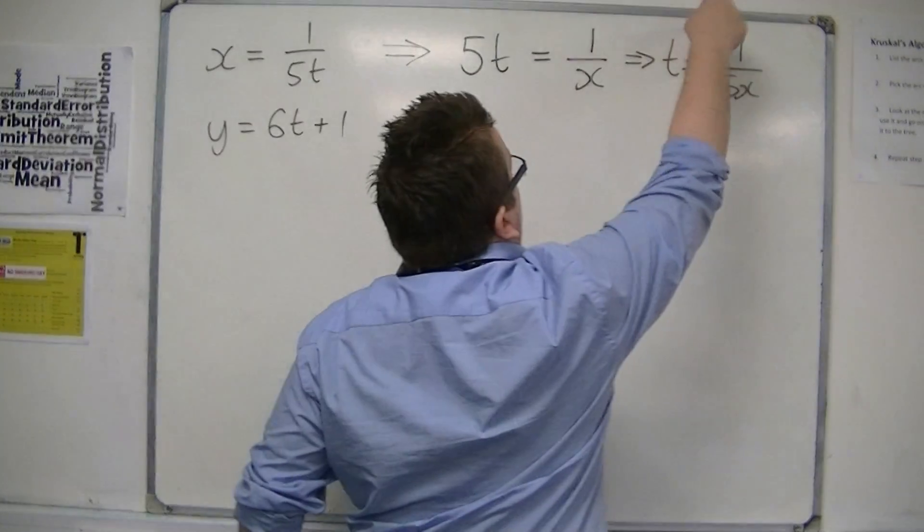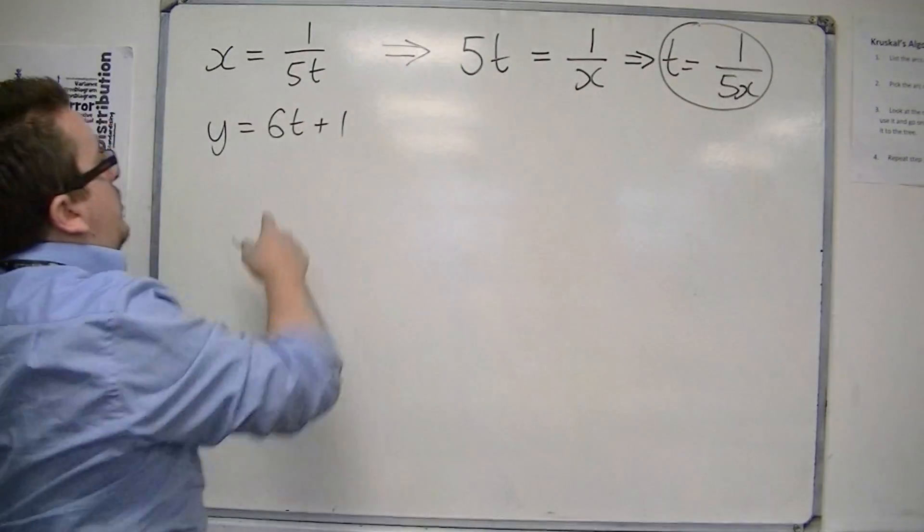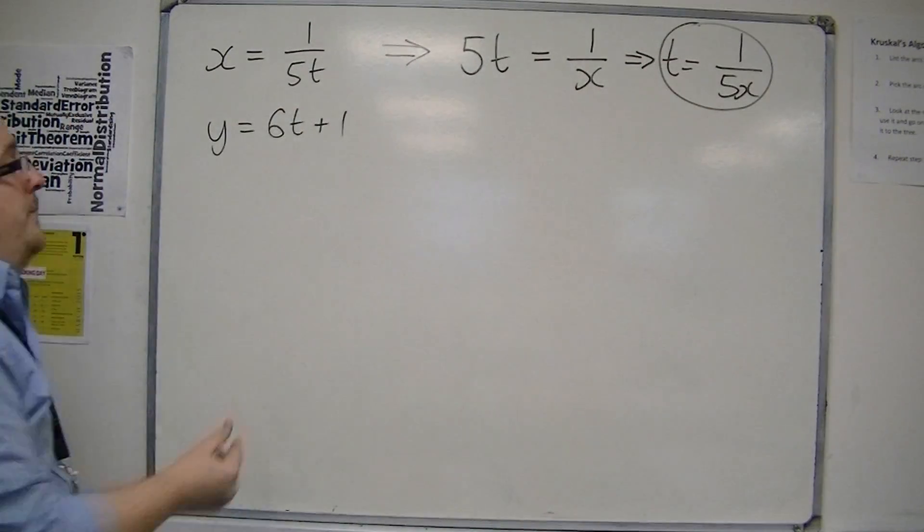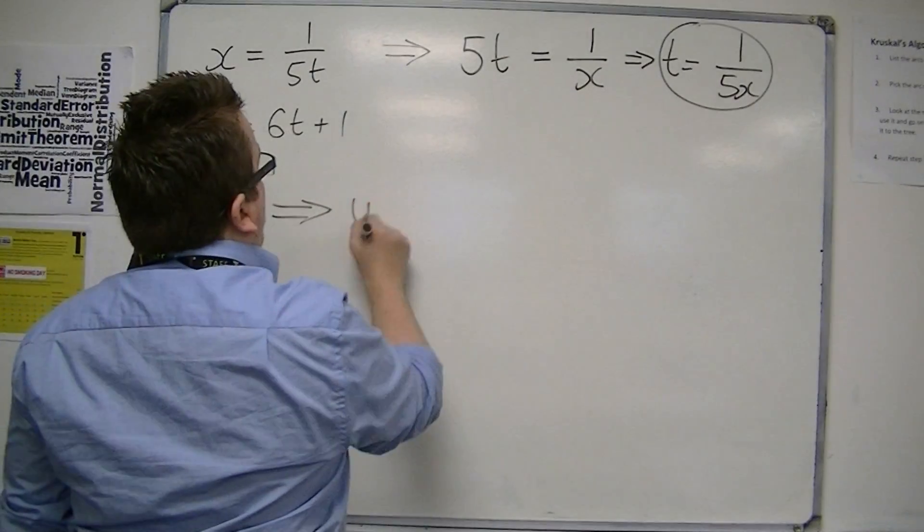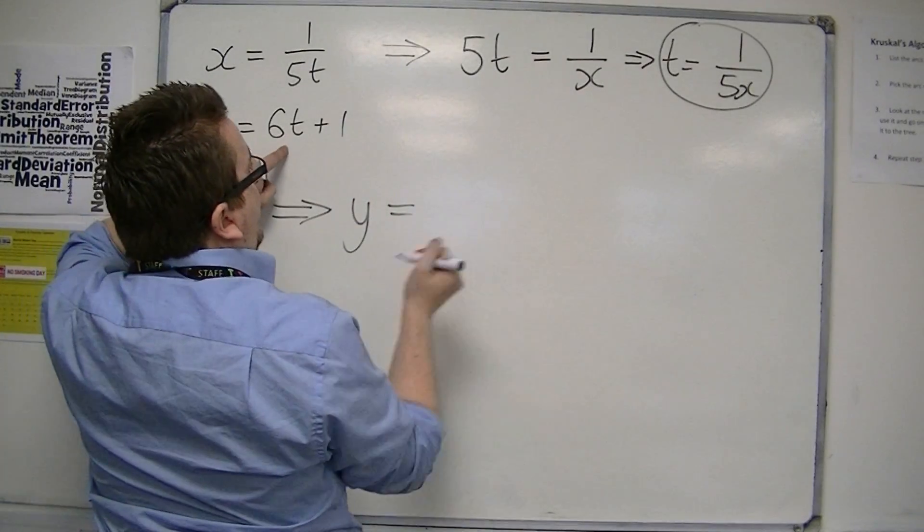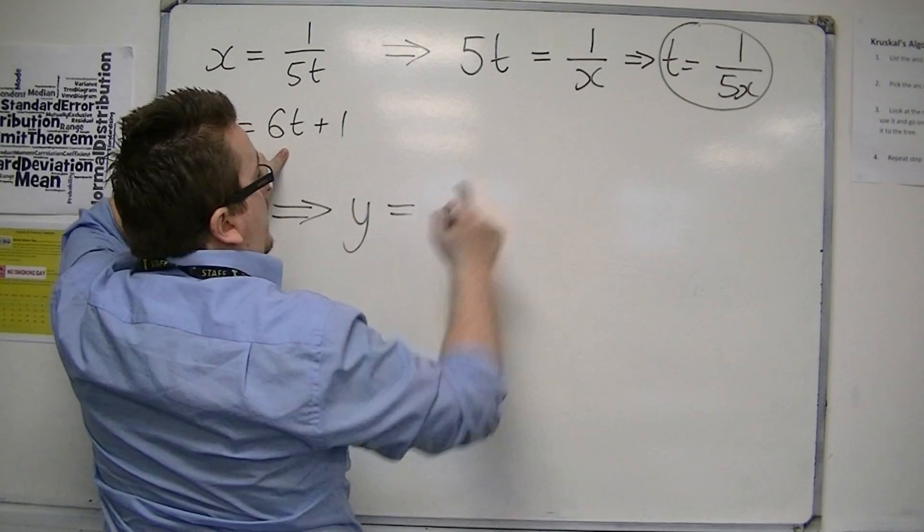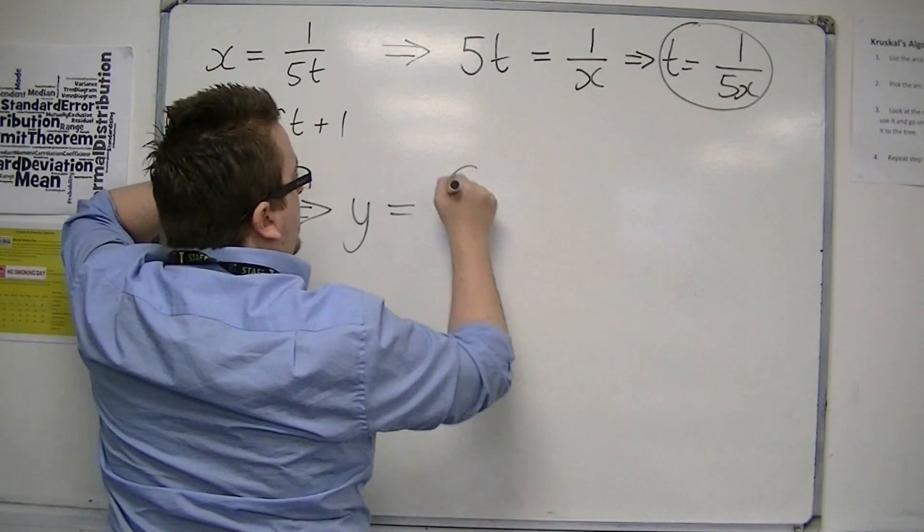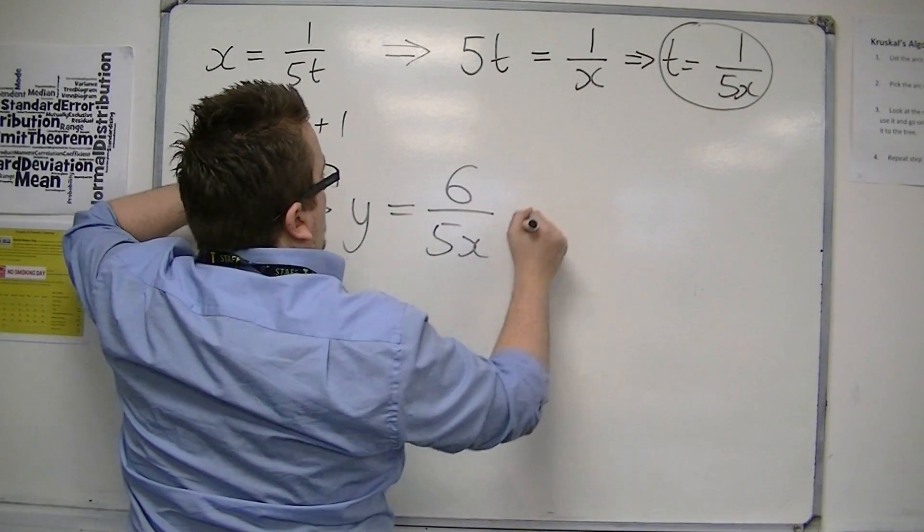Now, if I substitute that into my y equals, that tells me that y is equal to 6 lots of t. So, 6 lots of 1 over 5x plus 1.